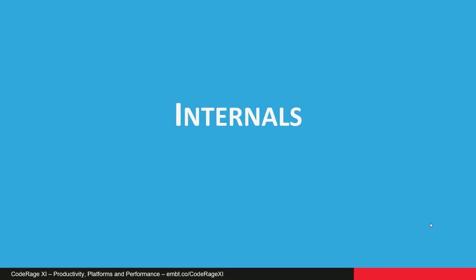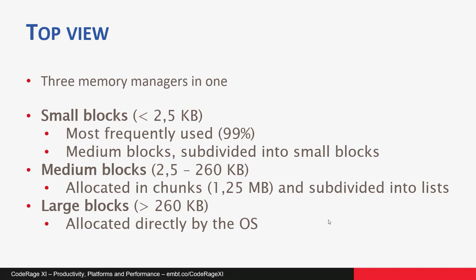Before we really start, I'd like to very quickly describe FastMM's internal organization, as it will be important for today's story. FastMM is actually made of three memory managers under a unified front. The SmallBlocks manager handles memory blocks smaller than 2.5KB. This type of memory is most frequently used in modern programs, and as was discovered when FastMM4 was initially implemented, it contains more than 99% of a typical program's memory allocations.